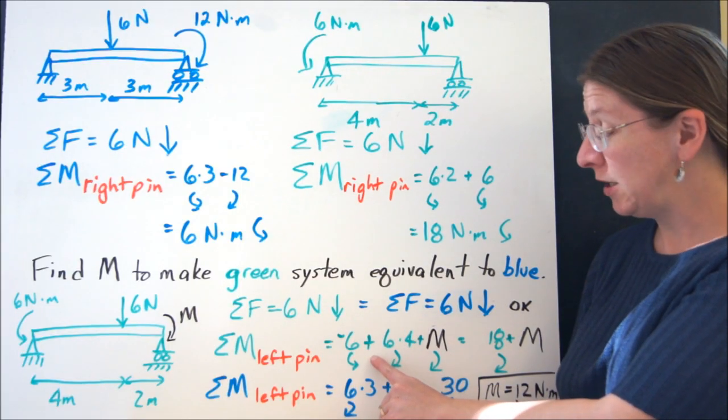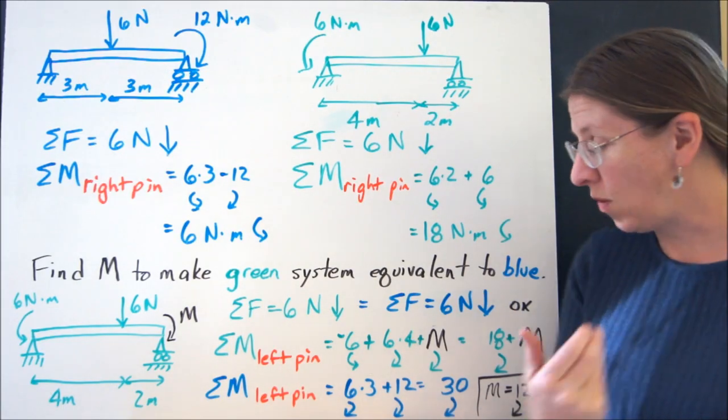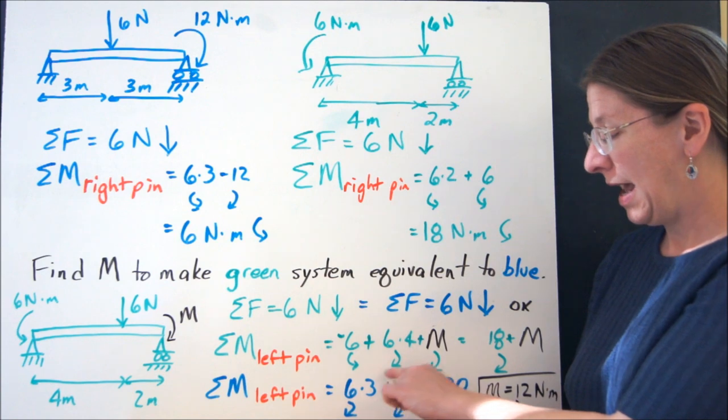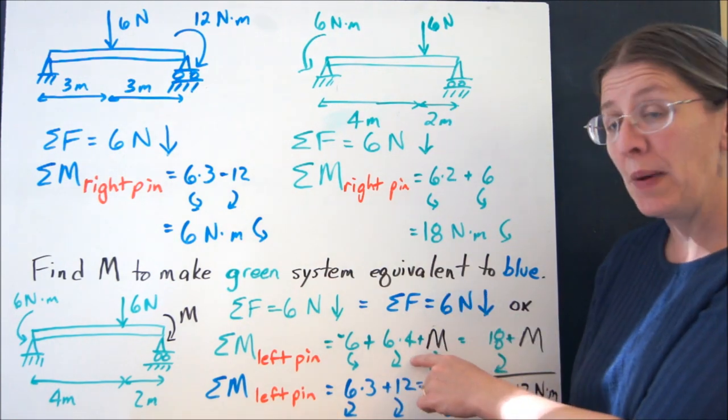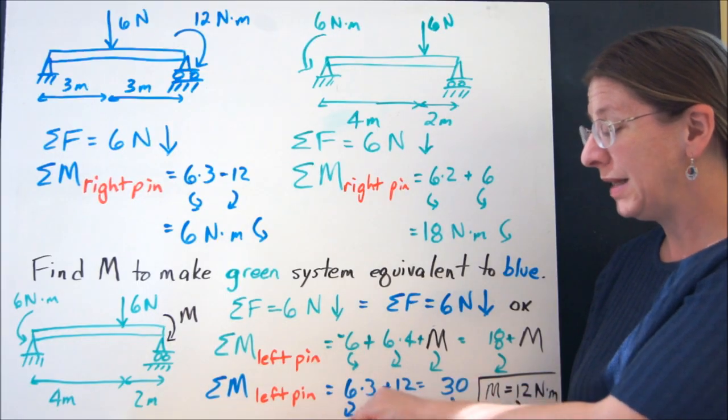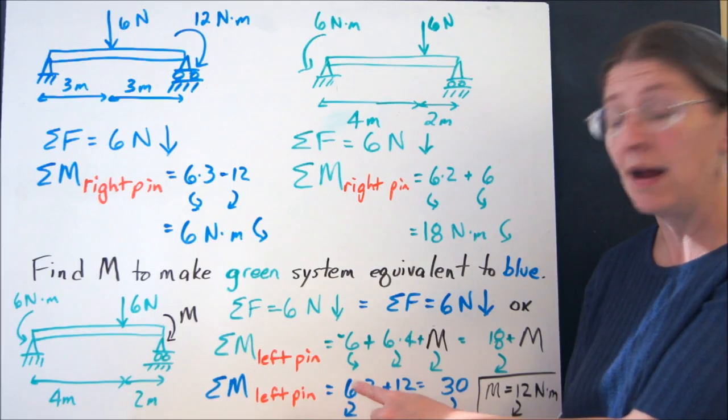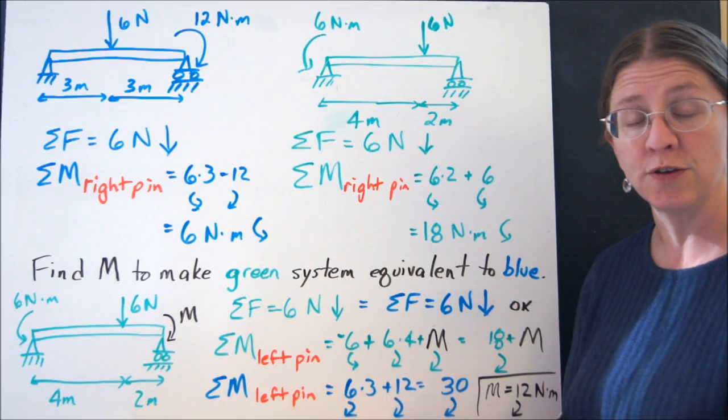When I summed my moments here, I said that 6 counterclockwise was negative and 6 times 4 clockwise was positive in my equation. I have to make the same decisions for both of my systems here. Otherwise, I've got two things that don't equal each other.